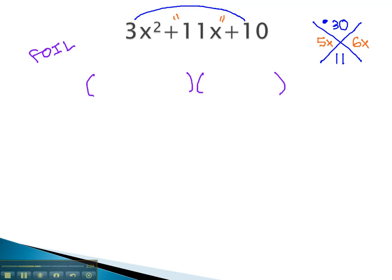Trinomials will factor to 2 binomials, where the first term comes from multiplying the first times the first. To get 3x squared, the only way to do so would be 3x times x.